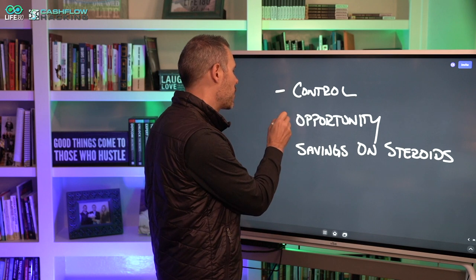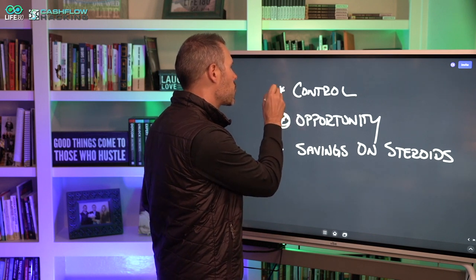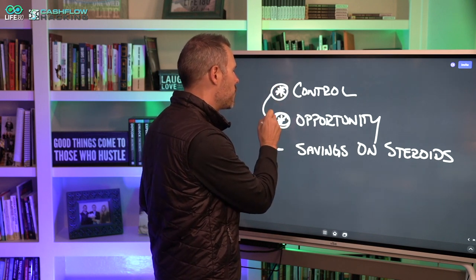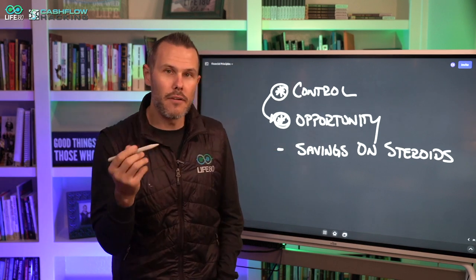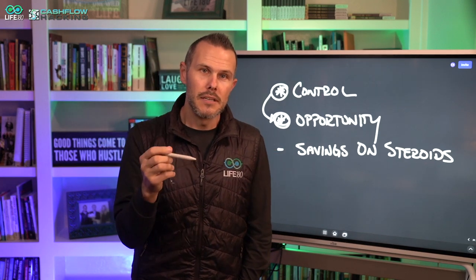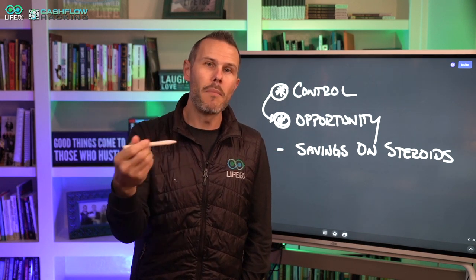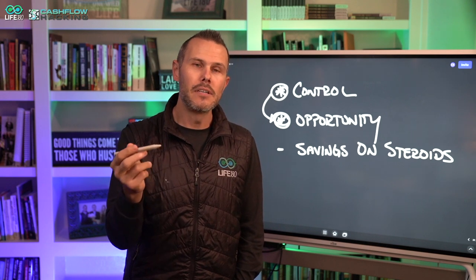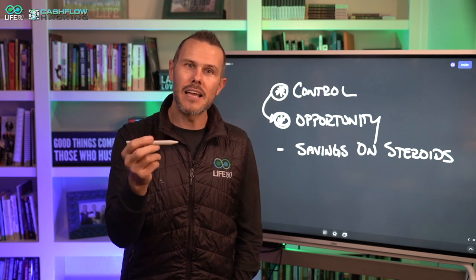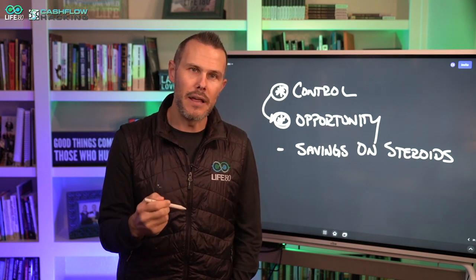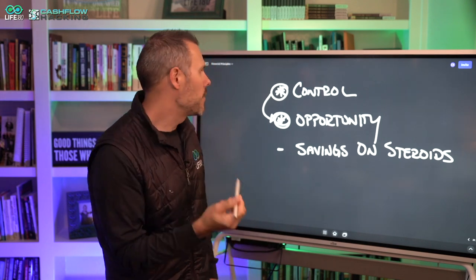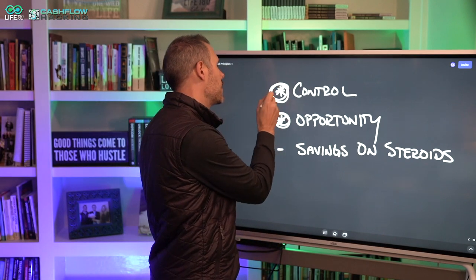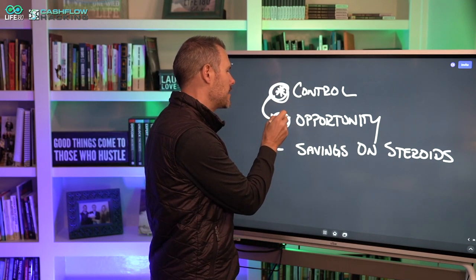It's about creating opportunity and being an opportunistic investor. Control allows you to have more opportunity. You ever notice: if you have more money, the more access to capital you have, opportunity just seems to track you down — it kind of seems to find you. Because when you have control of your money, it can track you down and you can take advantage of the opportunity.